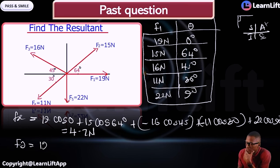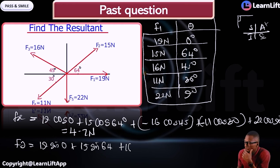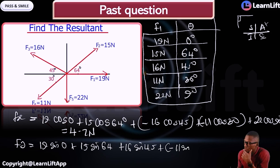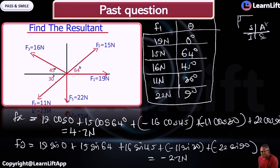For Fy: 19 sin 0°, plus 15 sin 64° (first quadrant, positive), plus 16 sin 45° (second quadrant, sine positive), minus 11 sin 30° (third quadrant, sine negative), minus 22 sin 90° (fourth quadrant, sine negative). If you calculate that very well, you get minus 2.7 N.